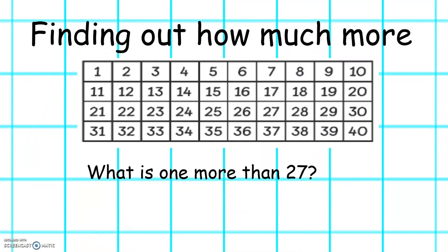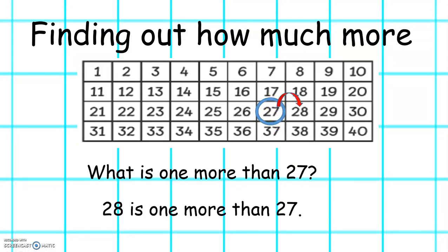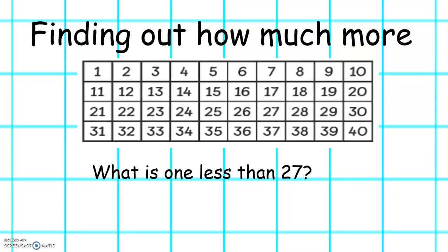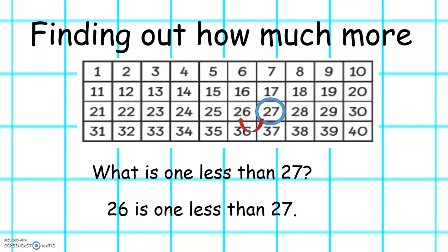Now that we know numbers to 40, we can find out how many more than a given number. Our question is: what is one more than 27? Let's find 27 and find one more. 28 is one more than 27. What number is one less than 27? Let's find 27 and find one less. 26 is one less than 27.